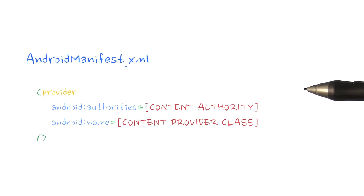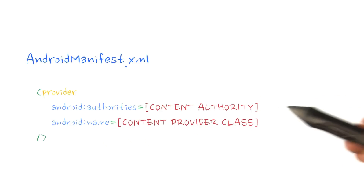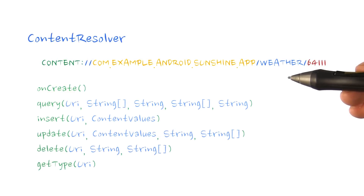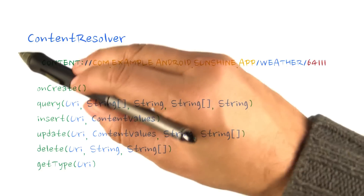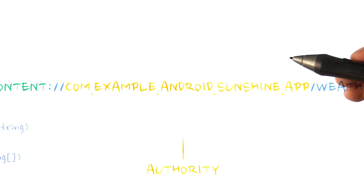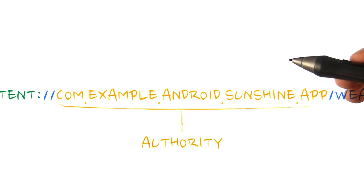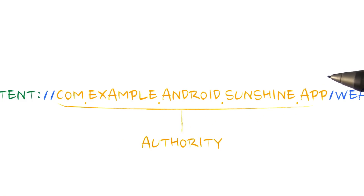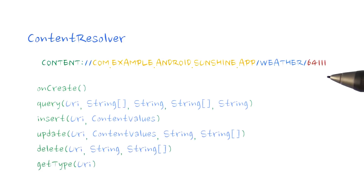But before we can start implementing step four and testing our content provider, we need to register it in the Android manifest so that Android knows about it. Once the weather provider has been registered with the package manager, we can use an Android utility class called the content resolver to refer to it. The content resolver locates our class using the content authority and makes direct calls to the weather provider on our behalf.